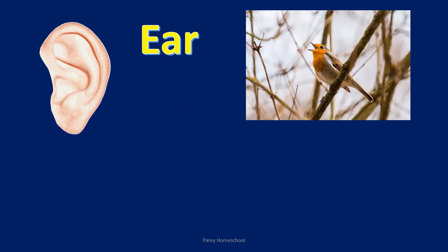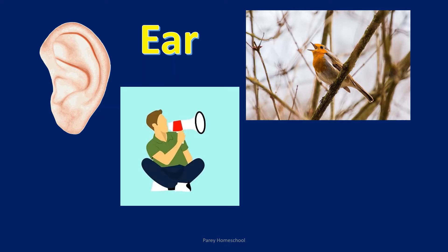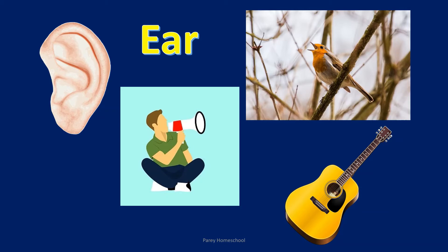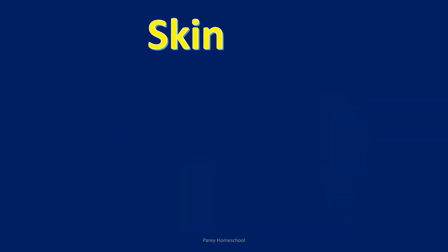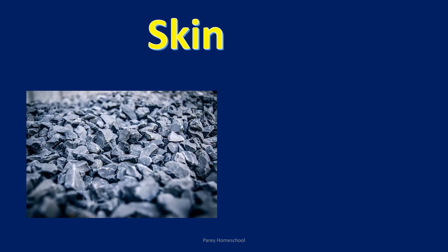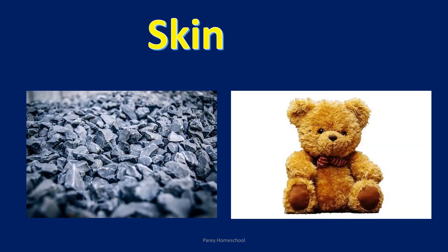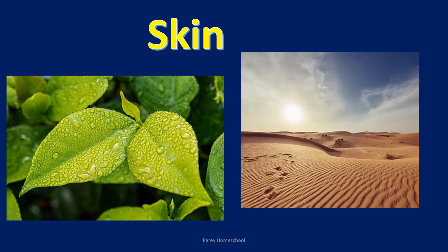We hear different sounds with our ears — the chirping of birds, honking of cars, someone talking or shouting, or beautiful music. These are all sounds we can hear with the help of our ears. The skin helps us to feel. We can feel things that are hot or cold, rough or soft, or wet or dry with the help of our skin.